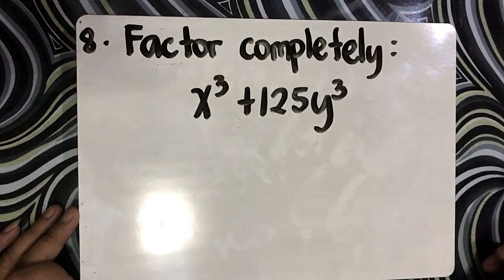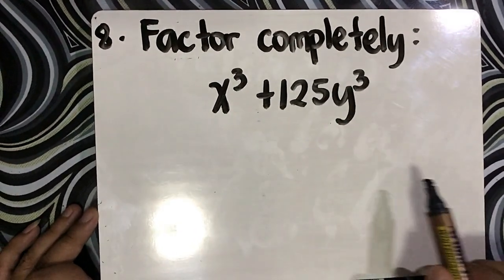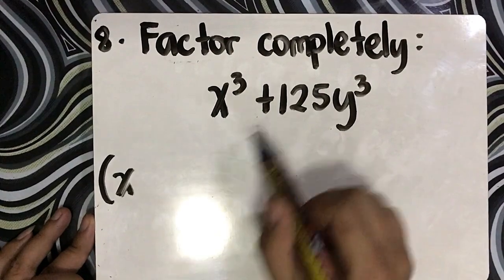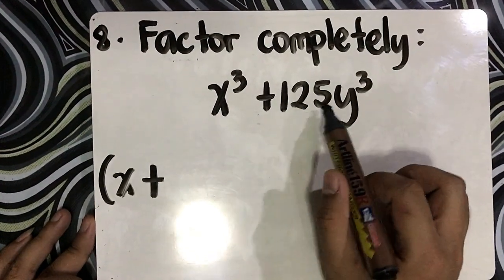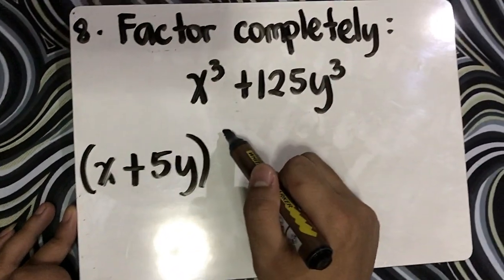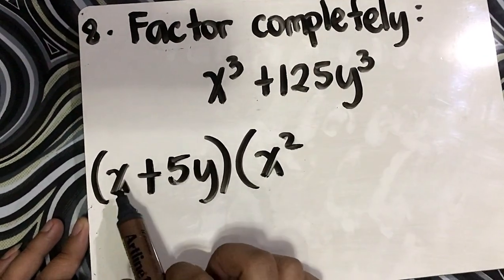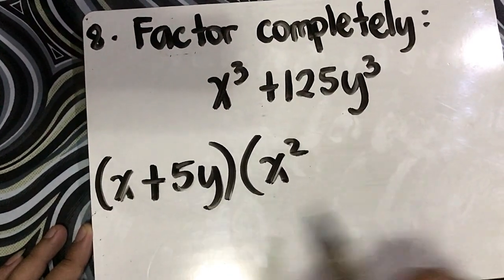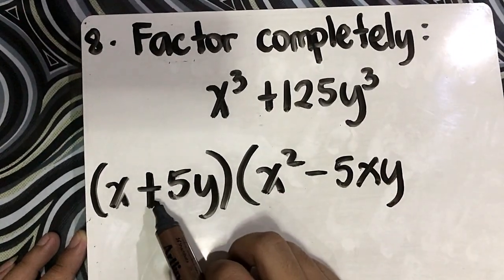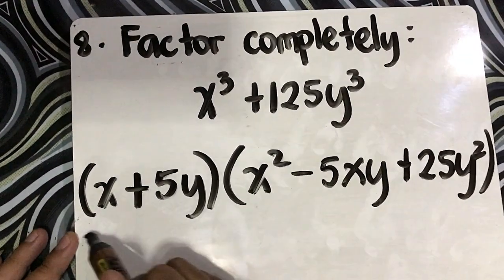Question number 8: Factor completely x cubed plus 125y cubed. This is the sum of two cubes. First step, get the cube root of x cubed, which is x. Copy the sign plus, and the cube root of 125y cubed is 5y. Close the quantity. Open parenthesis: square the first term — x squared; multiply the first and second with opposite sign — negative 5xy; then square the second term — positive 25y squared. Final answer.